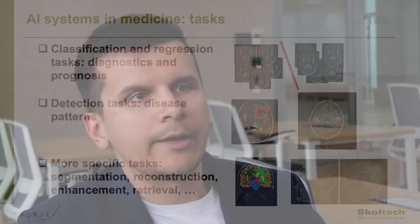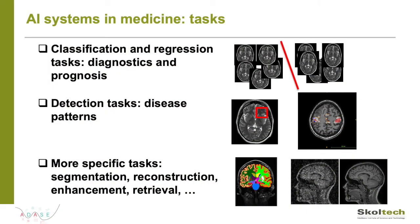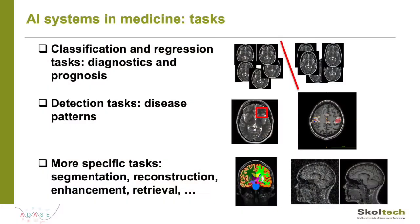What are the main tasks of AI in medicine we will talk about? First, it is a Diagnostics and Outcome Prognosis task. Then a set of Detection tasks to find specific disease patterns in data or on the image. And finally more specific tasks like image segmentation, reconstruction, quality enhancement, information retrieval and others. During the talk I'll demonstrate several ideas on two examples from our own practice regarding MRI segmentation and anomaly detection, as well as a predictive model based on functional MRI, which is complex four-dimensional spatio-temporal data.